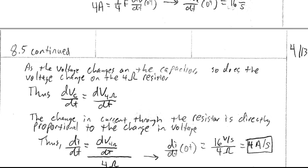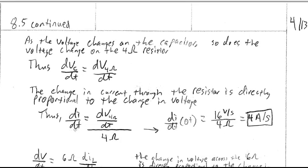Since I = V/R, we have dI/dt = (dV/dt) / R. The reference current I through the 4 ohm resistor gives dI/dt at 0+ = 16 V/s divided by 4 ohms = 4 amps per second.